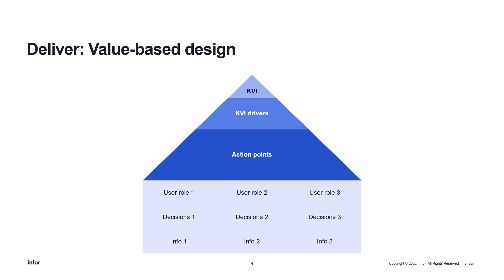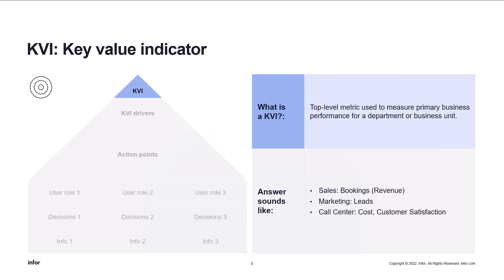Let's start with the KVI. So what is a KVI? It is the key value indicator — a top-level metric used to measure primary business performance for a department or a business unit. The KVI is the number your dashboard or series of dashboards are built around, the main figure. For sales, bookings or revenue is a good KVI. For marketing, we could use number of leads. For call center, cost and customer satisfaction are examples of KVI.